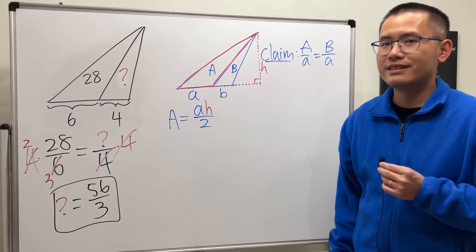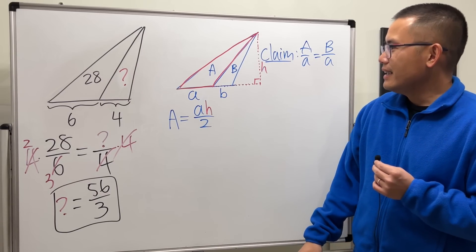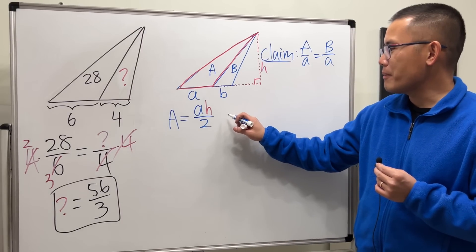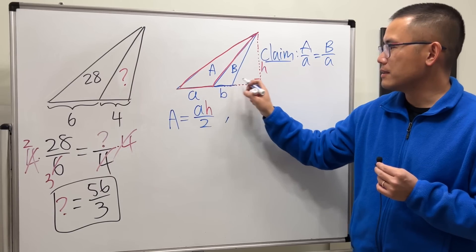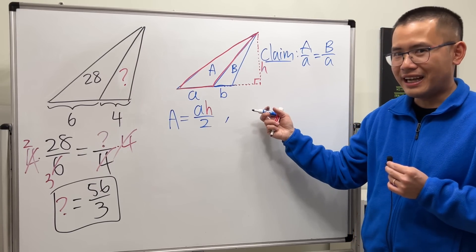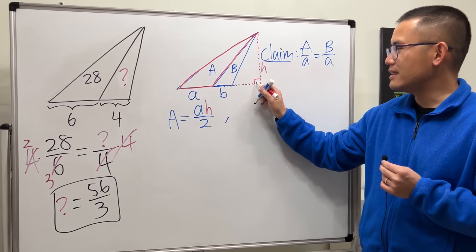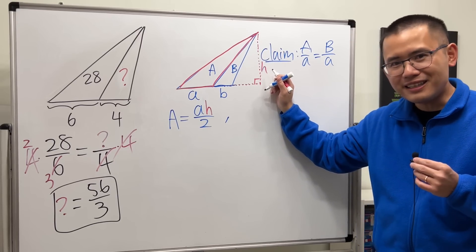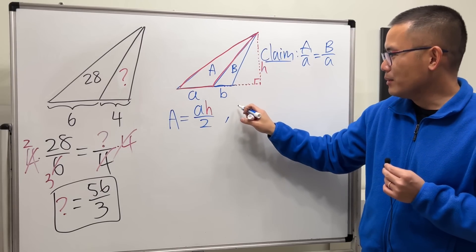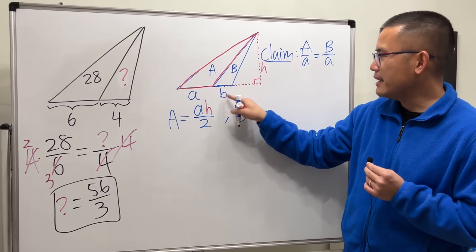In the meantime, we can also do the same thing for capital B. This right here is its base, and then to get the height, well we actually have to do the same thing: extend this side, go up, and then it's the same height. So for capital B: base times height divided by 2.